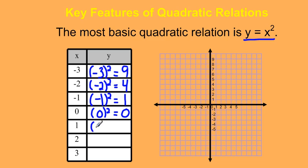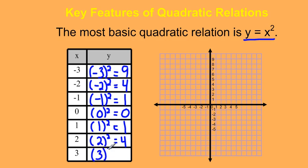If we sub in 1 for x, we get 1 squared, which is 1. Then 2 squared, which is 4. And finally, 3 squared, which is 9.